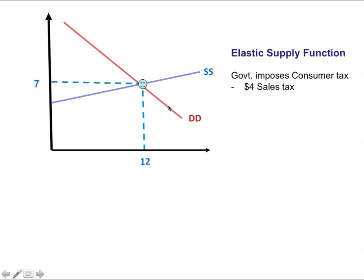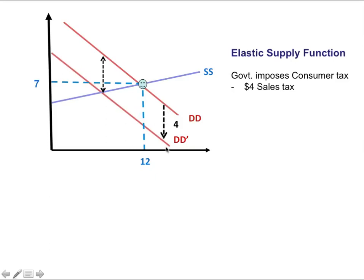The demand function represents willingness to pay — consumers are willing to pay a given price for a given quantity. As soon as the sales tax is imposed on consumers, they think about their willingness to pay inclusive of the sales tax, which is like the sales tax bringing down the demand function by the amount of the tax. So we have a new demand curve DD prime.